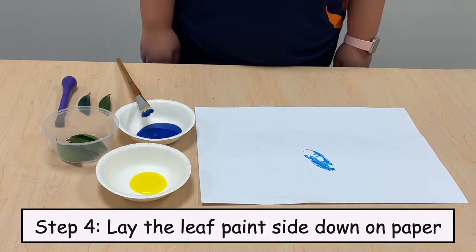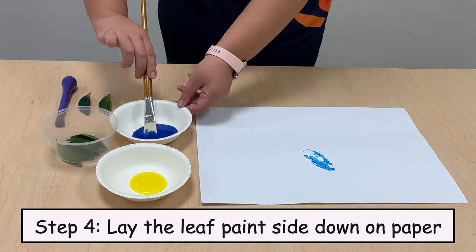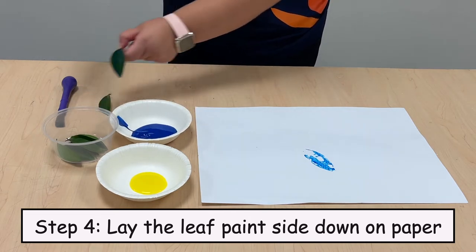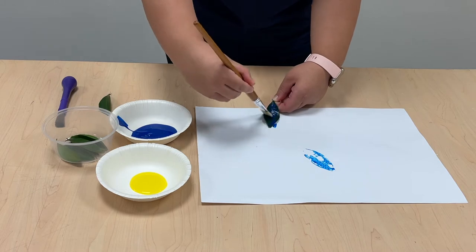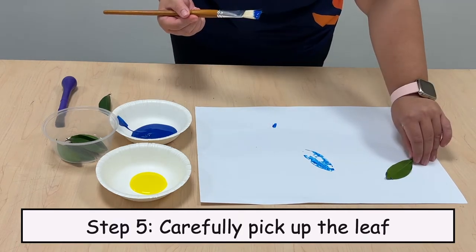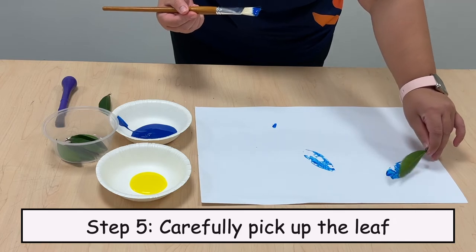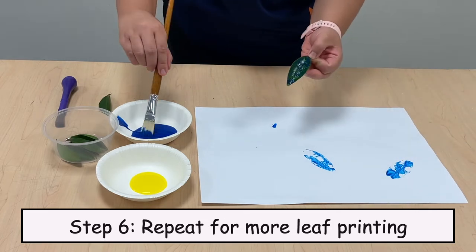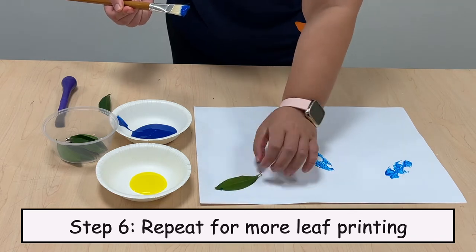Step 4: Gently lay the leaf paint side down on the drawing paper. Step 5: Carefully pick up the leaf. Step 6: Repeat for more leaf printing.